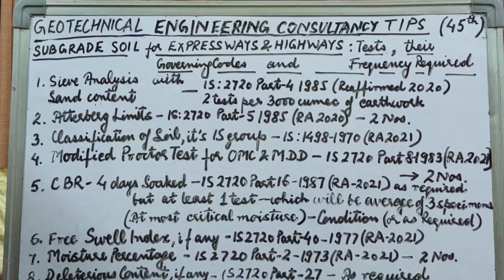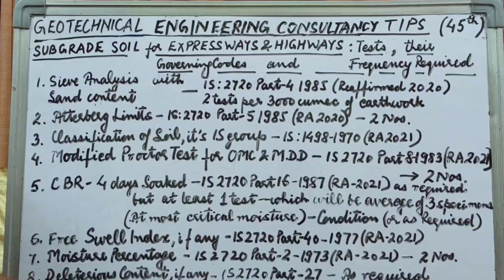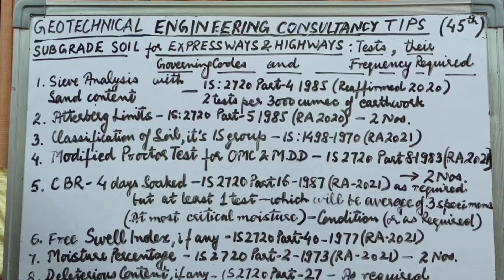After you have identified the kind of soil to be used for earthwork and subgrade preparation, you have to do the Modified Proctor Test and California Bearing Ratio test. The Modified Proctor Test is done for finding the Optimum Moisture Content (OMC) and Maximum Dry Density (MDD), as per IS 2720 Part 8, 1983 reaffirmed 2021. A minimum of two tests has been specified for this as well.